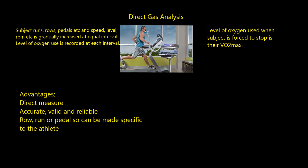What are the advantages of direct gas analysis? It is direct — it gets to the point and we don't have to predict anything or do a calculation. The computer will tell us exactly the maximum volume of oxygen used by that performer at the point at which they have to stop, which is their VO2max. It's also accurate, valid, and reliable. We can repeat the test precisely, and results are very specific because it tests exactly VO2max. Within that validity, we can get them to row, run, or pedal, making it very specific to the athlete — cyclists on a bike, runners on a treadmill, rowers on a rowing machine.